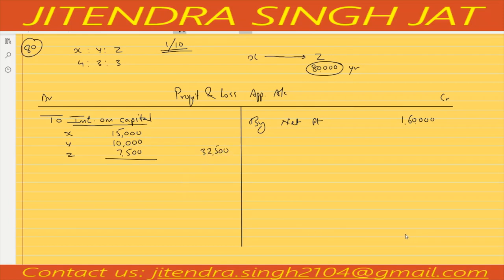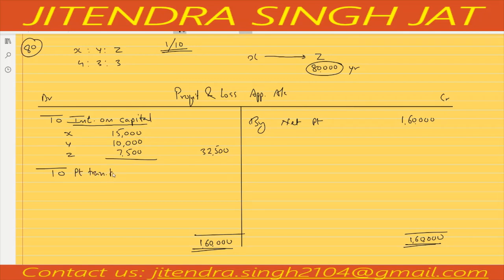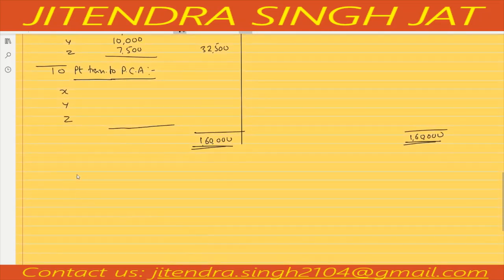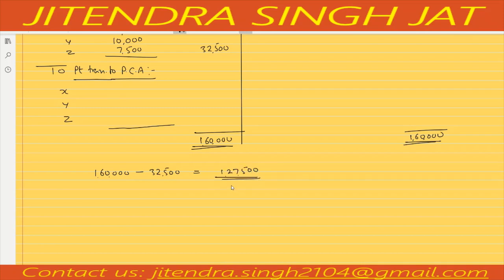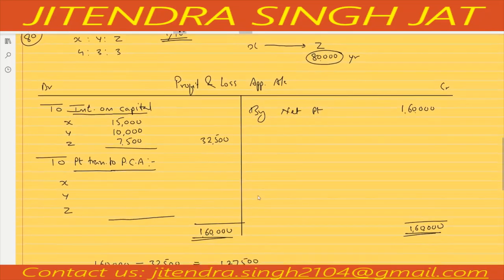So 1 lakh 60,000 minus 32,500 leaves 1 lakh 27,500 profit remaining. This will be distributed among partners in the ratio 4 to 3 to 3.